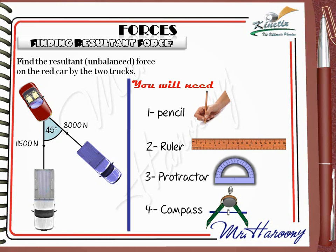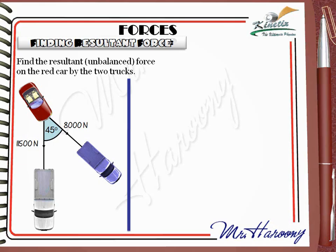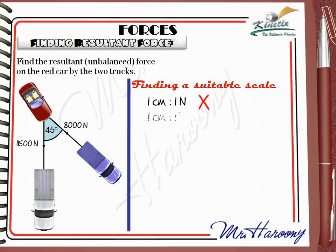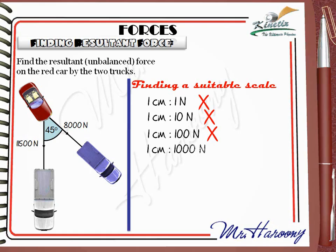The first step to draw the force diagram is to choose a suitable scale that can fit your exam paper. A scale of 1 cm to 1 N would require an 8000 cm line — impossible. At 1 cm to 10 N, the line is 800 cm, also impossible. At 1 cm to 100 N, it's still 80 cm — unsuitable. So we choose a scale of 1 cm to 1000 N, making the 8000 N force an 8 cm line, which fits on a normal paper.